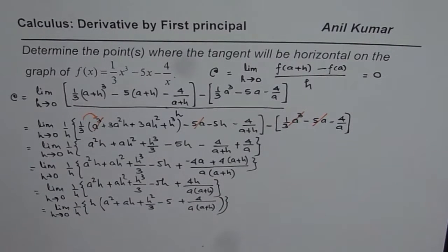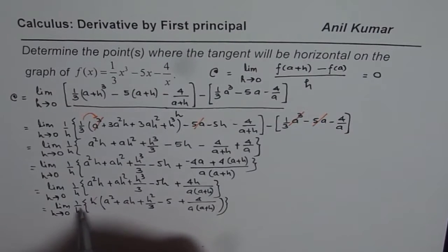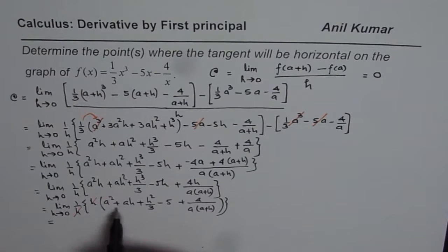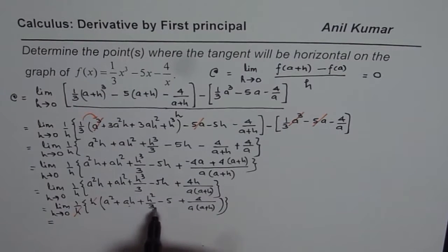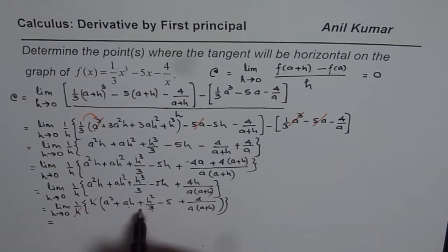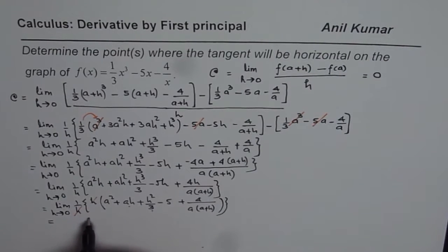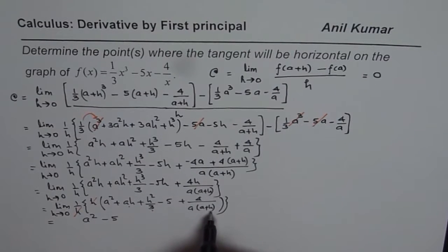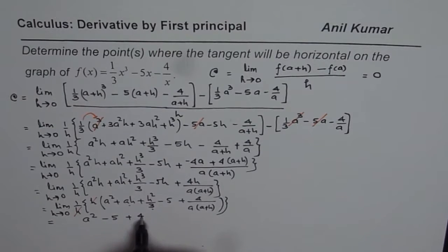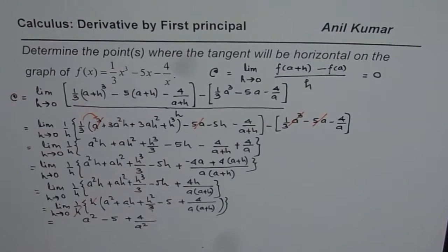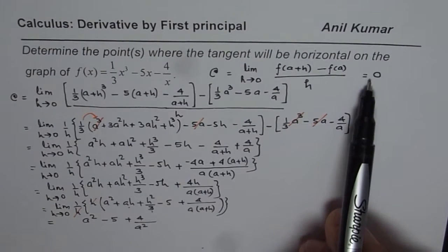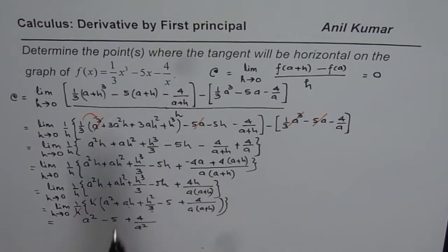At this stage, we cancel h and h. Now we can substitute h = 0 since there is no longer an h in the denominator. The terms with h become 0 — ah and h² go to zero — leaving a². So we get: a² - 5 + 4/a². That is the instantaneous rate of change of this function at any point x = a.